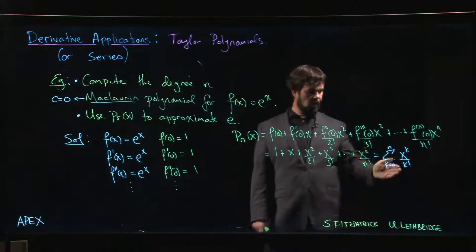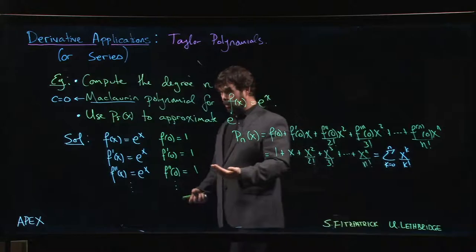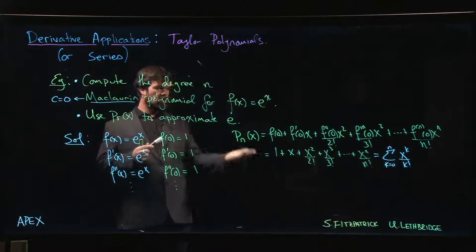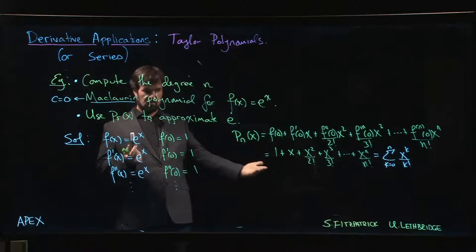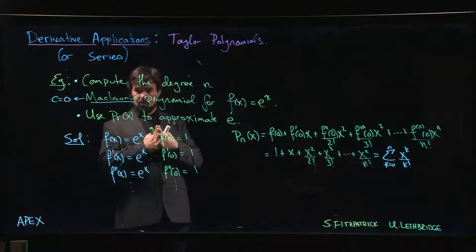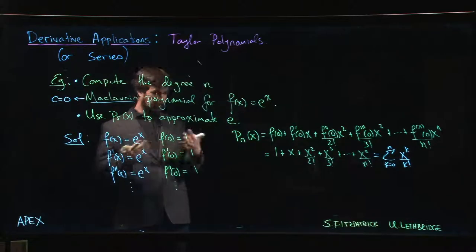But if you truncate, if you stop at some point, you only have an approximation of e to the x. The idea is the more terms you add, the better the approximation gets. And the closer you stay to 0, the better your approximation will be.